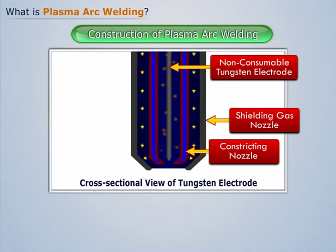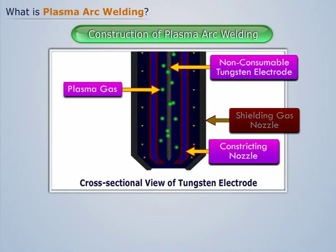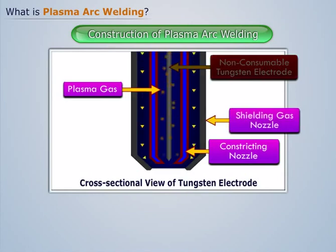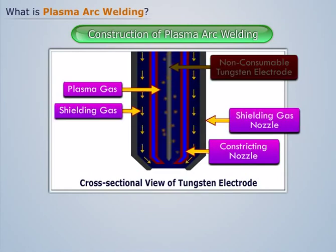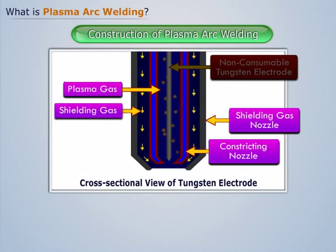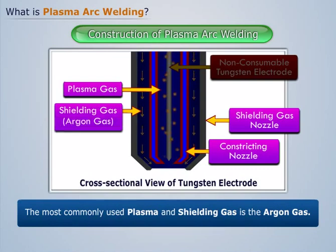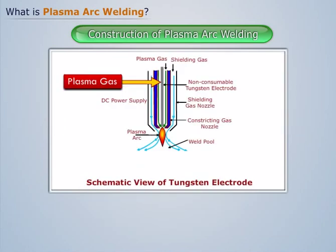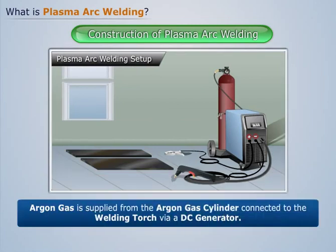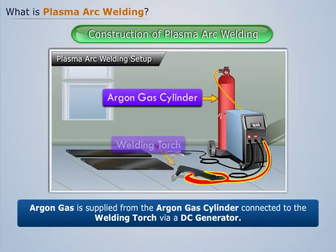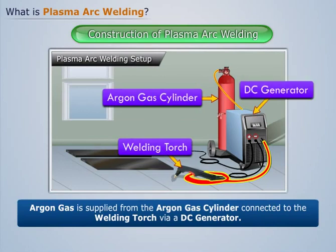Plasma gas passes through the gap between the tungsten electrode and the constricting nozzle. The most commonly used plasma and shielding gas is argon gas, which is supplied from an argon gas cylinder connected to the welding torch via a DC generator.